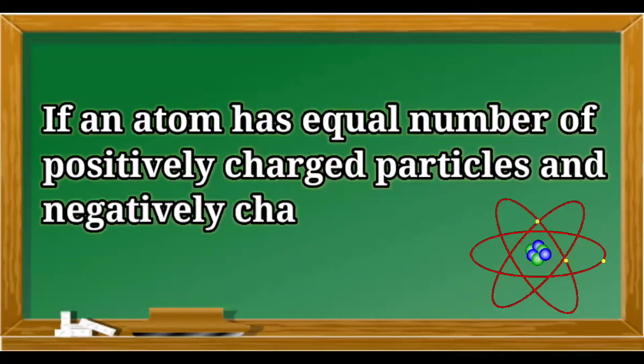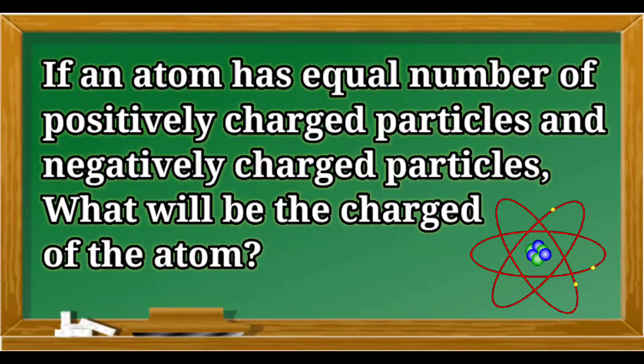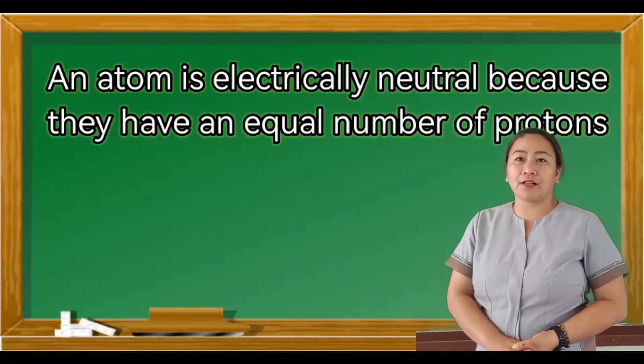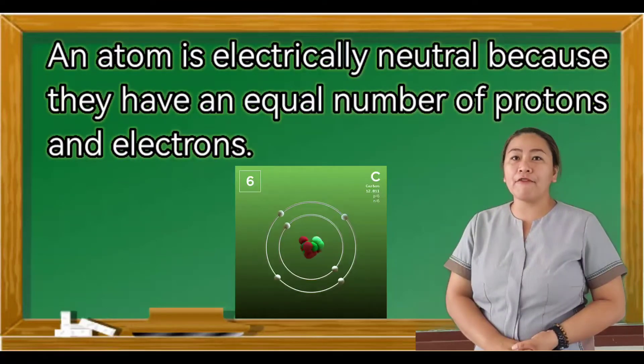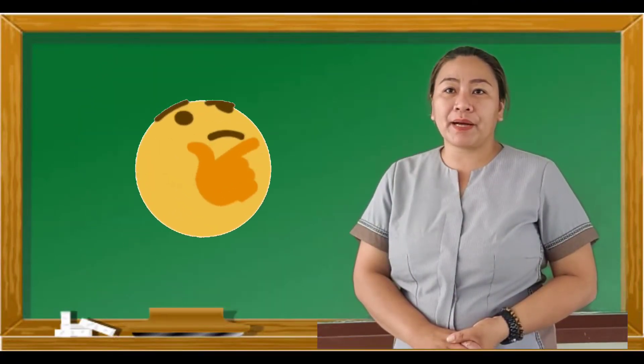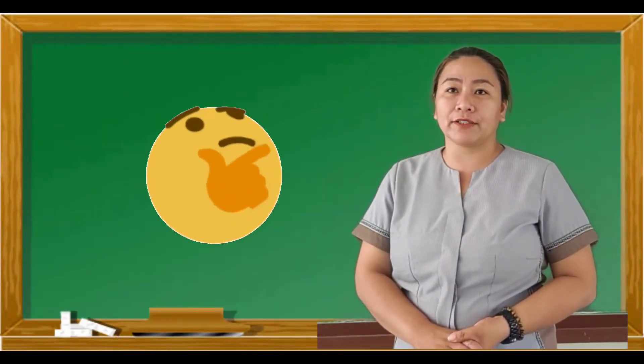If an atom has equal number of positively charged particles and negatively charged particles, what will be the charge of the atom? An atom is electrically neutral because they have an equal number of protons and electrons. When do you say that an object is positively charged or negatively charged?